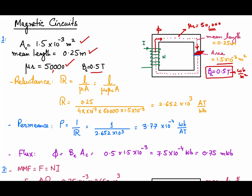Reluctance is directly proportional to the length of the path and inversely proportional to the cross-sectional area. The reluctance is given by R = l/(μA), where μ = μ₀μᵣ. Here μ₀ is the permeability of free space and μᵣ is the relative permeability — how many times more permeable the material is than air — which is 50,000 in this case.